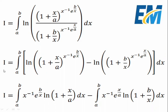So i equals the integral from a to b of ln of the numerator minus ln of the denominator. Then we have ln of (1 plus x over a) all to the power x^(-1) times e^(b/x).